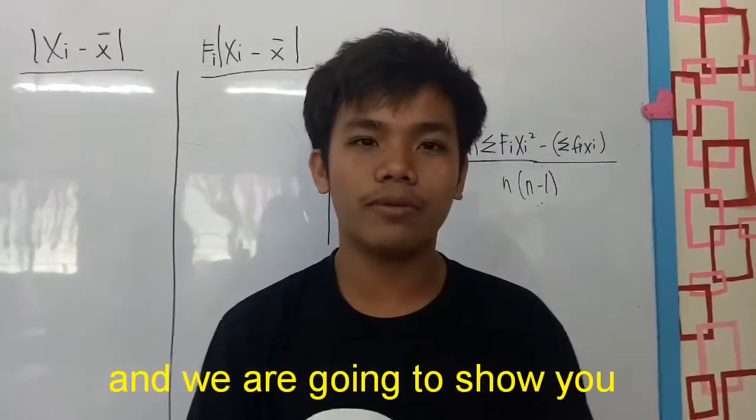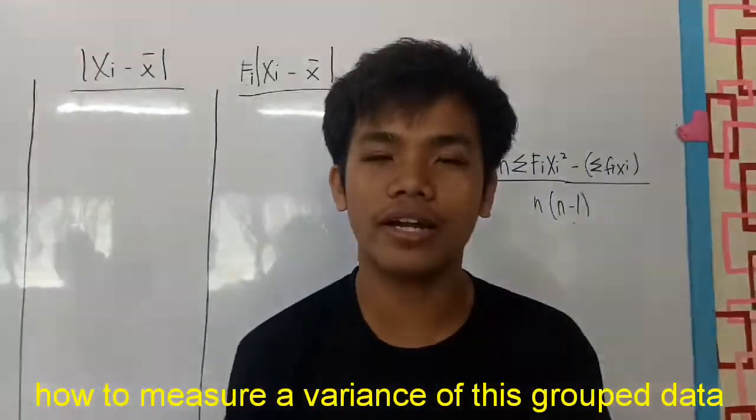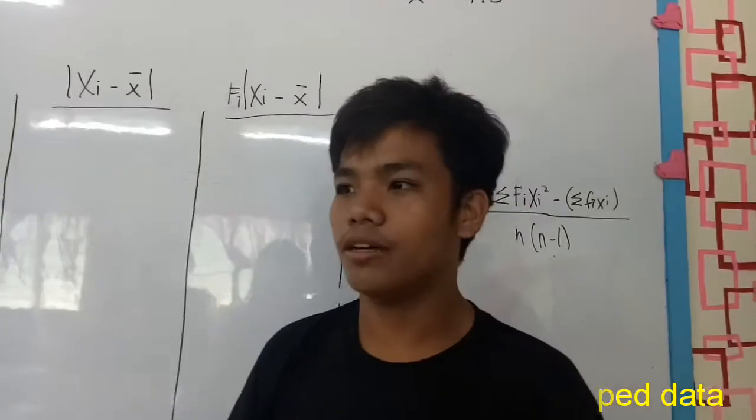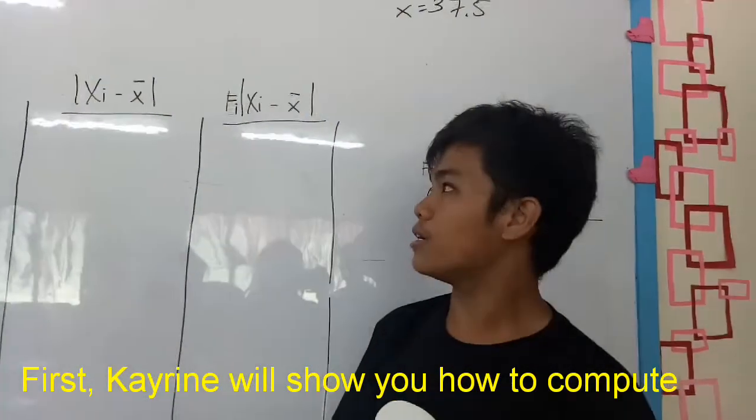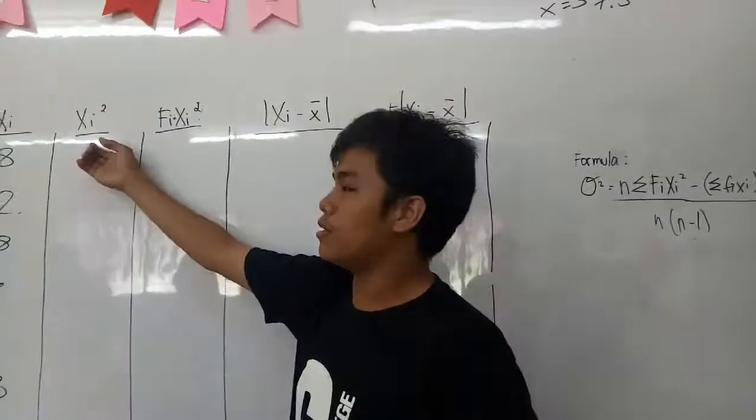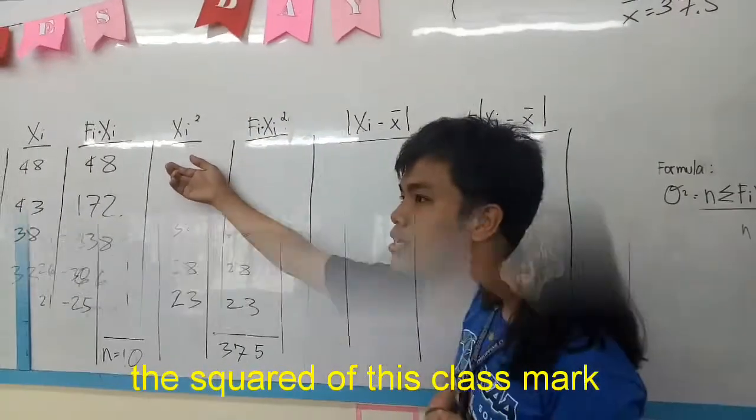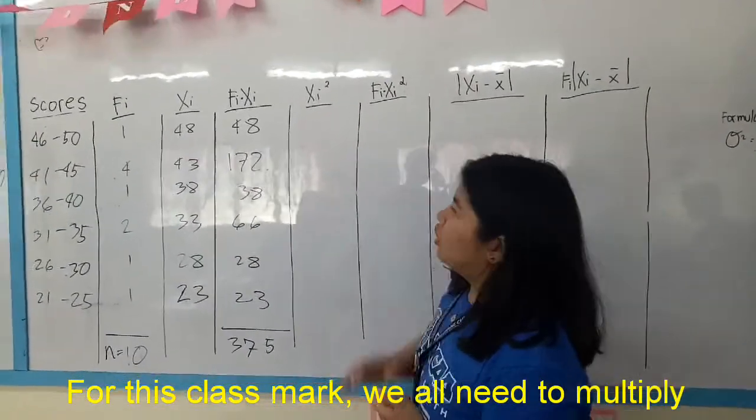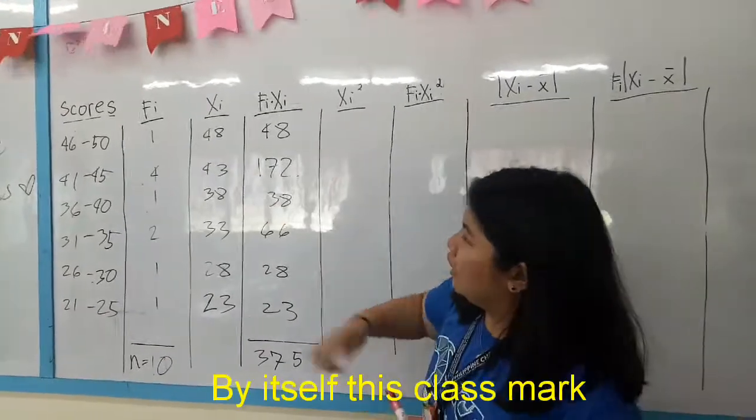We are at group 4 and we are going to show you how to measure the variance of this group data. First things first, Karim will show you how to compute the square of class mark. For this class mark, we all need to multiply by the class mark.